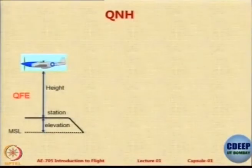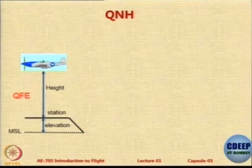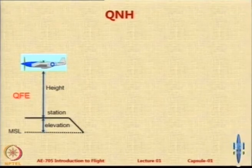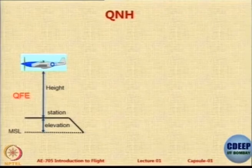The first one is called QFE. But first, there is QFE: QFE is the height from the current location below — you measure this with a radio altimeter. You send a beam, receive it back, and find the delta H. That height is called QFE.